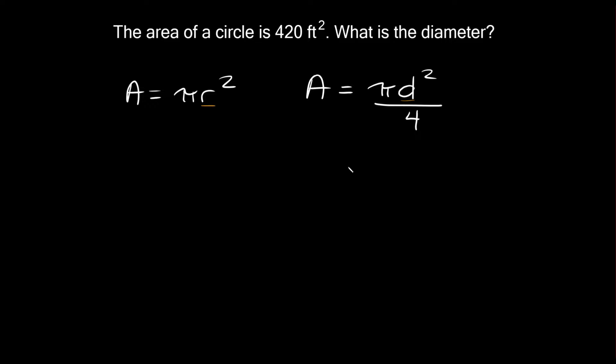The formula you want to use depends on what you're looking for or what you're given. We're looking for the diameter so let's use the formula that uses the diameter. The area of a circle equals pi times d squared all over 4.